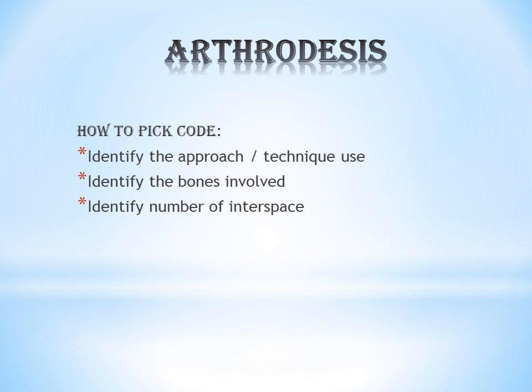Now we come to the topic of Arthrodesis. 'Desis' means fusion, so Arthrodesis is the process of fusion of bones. For example, in conditions like degenerative disc disease or a fracture, in order to stabilize the bones, we fuse them — that is called Arthrodesis. When coding Arthrodesis, first identify the approach or technique used, such as anterior or posterior technique.